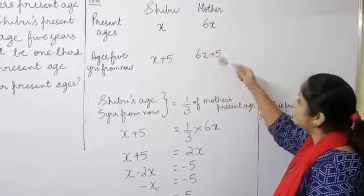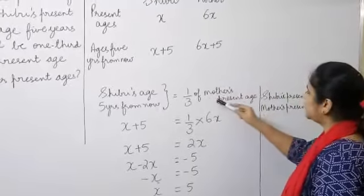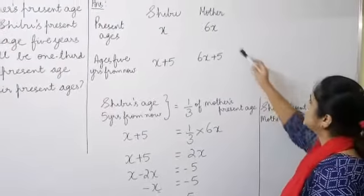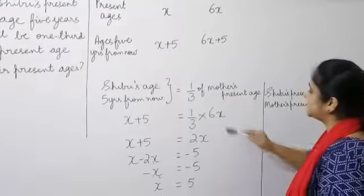Don't use this age. This is the mother's age after 5 years. But we need to use the mother's present age. So, 6X. So, one third of 6X.